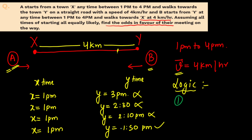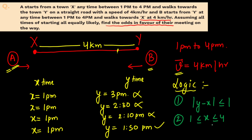The first key condition is: the difference between the departure times of A and B should be less than or equal to 1 hour — that is, |Y - X| ≤ 1. The second condition is: X is between 1 and 4, and similarly Y is between 1 and 4, since both are allowed to leave between 1pm and 4pm.